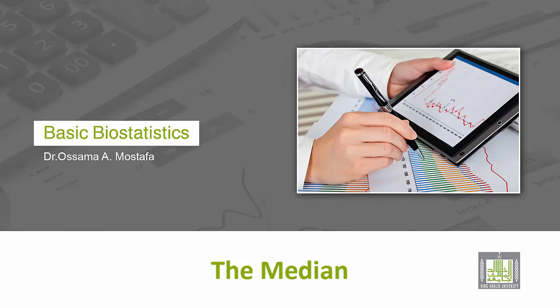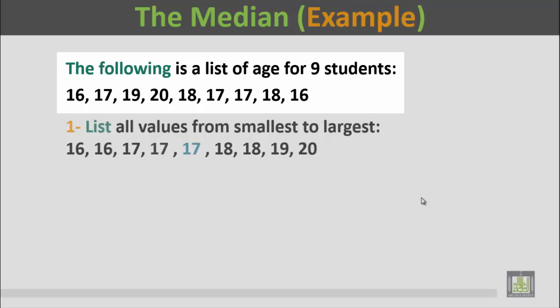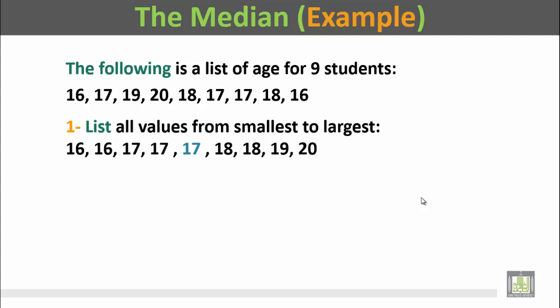Let us take an example of how to calculate the median. The following is a list of ages for 9 students. To calculate the median, the first step is to list all values from smallest to largest, or if you like from largest to smallest. Here we are going to arrange the values from smallest to largest.